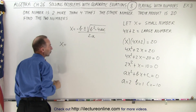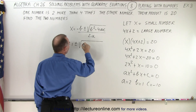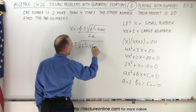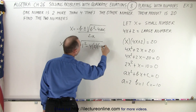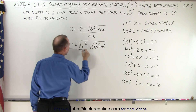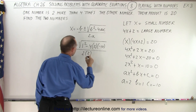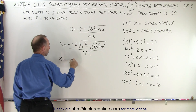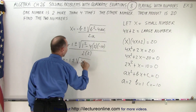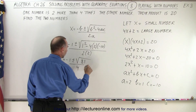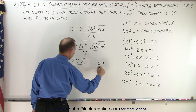So we have x = −1 ± √(1² − 4·2·(−10)), all divided by 2·2. That gives us x = −1 ± √(1 + 80) / 4, which is −1 ± √81 / 4, or −1 ± 9, divided by 4.